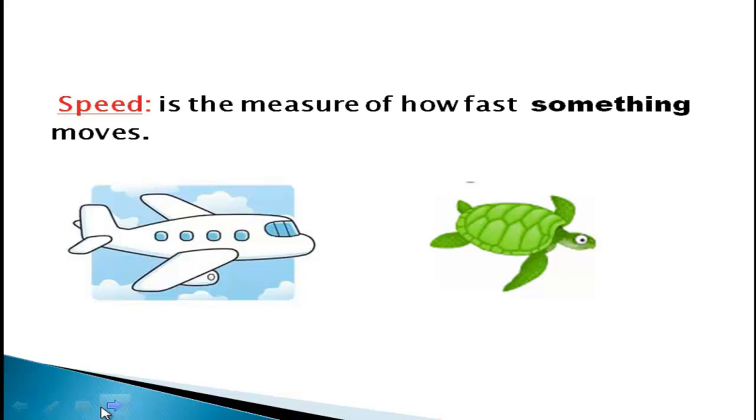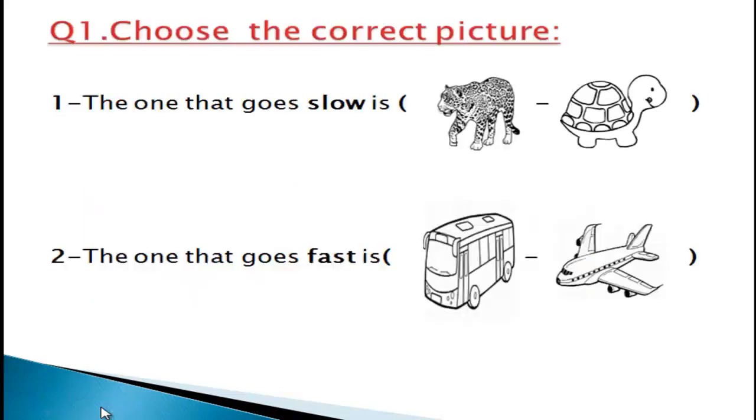A plane flies fast. A turtle walks slowly. Choose the correct picture. The one that goes slow is a turtle. The one that goes fast is a plane.